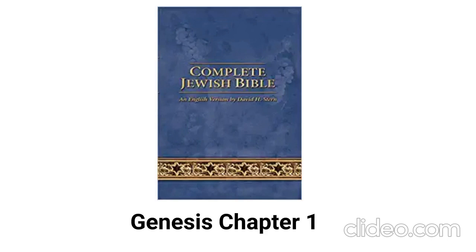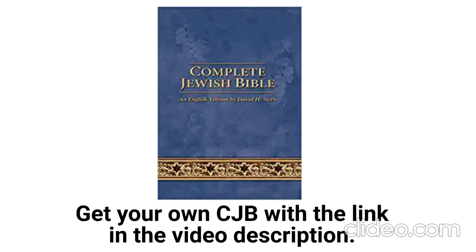In our study of Genesis chapter 1, we look at the beginning of everything that we see around us today. There is much debate about the origin of the world but the only plausible explanation is found in this book of the Torah. The word Torah means teaching and specifically refers to the teaching that God gave to Moses in the first five books of what is commonly called the Old Testament of the Bible. This first book is titled Bereshith in Hebrew, which means 'in the beginning.' In this study, we will be using the Complete Jewish Bible, CJB, translation, which was translated directly from Hebrew into English. You can get your own hardback or paperback copy on Amazon through the link in the video description. We will earn a small commission on the sale.